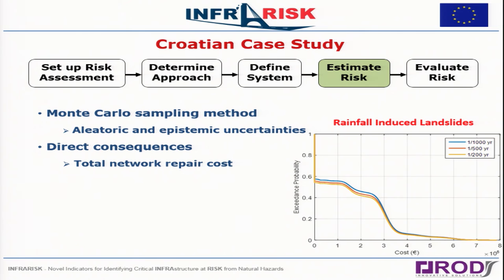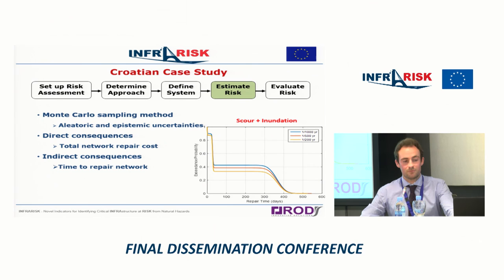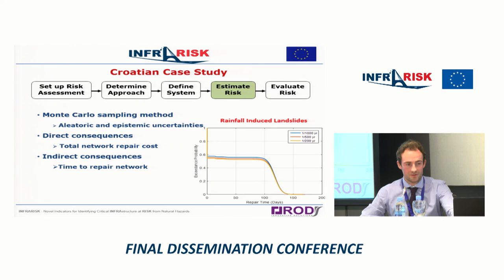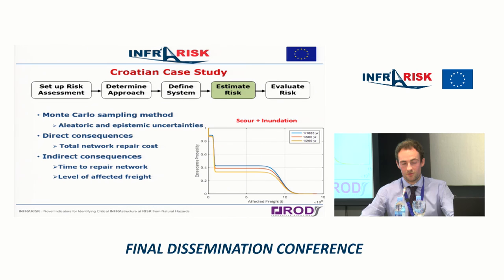For the northeastern region looking at rainfall-induced landslides, we have probabilities of exceedance for various costs. There is approximately a 60% probability across all return periods of experiencing some damage and repair costs, meaning there's also a 40% chance of no damage and no landslides given our inputs, with lower probability of occurrence at higher costs. We then looked at indirect consequences: repair times, freight disruption on the network, and passenger train disruption — showing similar step responses for inundation and scour and for rainfall-induced landslides.